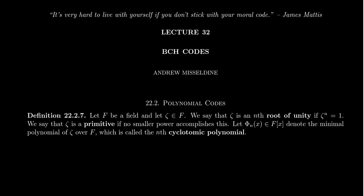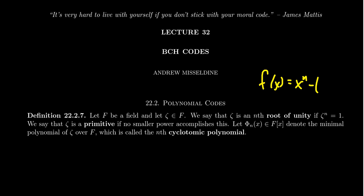This will include finite fields, which will then have applications to our coding theory. So let F be a field — this could be a finite field, an infinite field, characteristic 0, characteristic p, it doesn't matter. We'll say that zeta is some element of that field. We say that zeta is an nth root of unity if zeta to the n equals 1, equivalently if zeta is a root of the polynomial x^n minus 1.